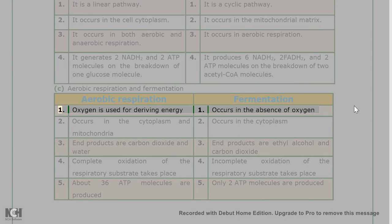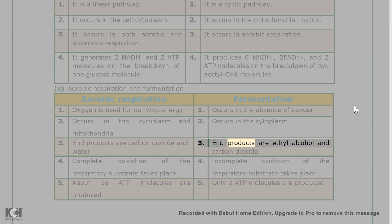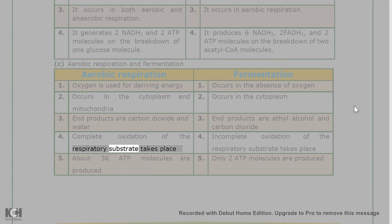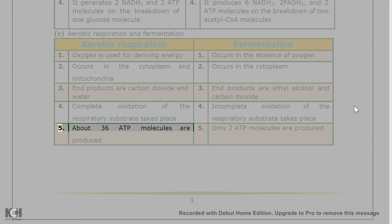Answer 1(c): Aerobic respiration vs Fermentation. Aerobic respiration uses oxygen for deriving energy and occurs in the cytoplasm and mitochondria; fermentation occurs in the absence of oxygen and takes place only in the cytoplasm. End products of aerobic respiration are carbon dioxide and water; end products of fermentation are ethyl alcohol and carbon dioxide. Aerobic respiration involves complete oxidation of the respiratory substrate and produces about 36 ATP molecules; fermentation involves incomplete oxidation and produces only 2 ATP molecules.